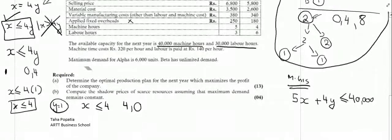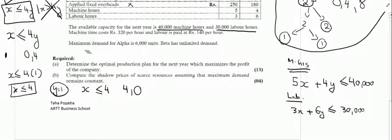Therefore, my second inequality of labor hours would be what? 3x plus 6y is less than or is equal to 30,000 as we have done in so many questions so far. Now, it says that machine time costs 320 rupees per hour and labor is 140 rupees per hour. These values are given so that we can compute our contribution and objective function. Lastly, it says that the maximum demand for F is 6000 units. Beta has unlimited demand. So we will have one more inequality which is x or the production of alpha will be less than or is equal to 6000 units.